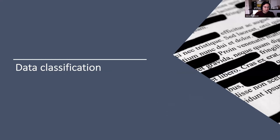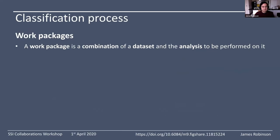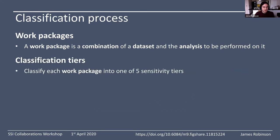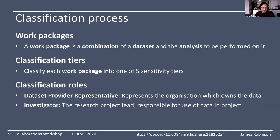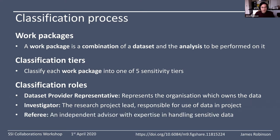Our classification process classifies what we call a work package — a combination of the dataset you're working with and the type of analysis you want to perform on it. We classify each work package into one of five sensitivity tiers. Several different roles take part in the classification: someone from the organization providing the data (the data provider representative), the investigator leading the research project, and finally a referee — an independent advisor with expertise in handling sensitive data — who is there to make sure the first two people come to agreement about the appropriate level of sensitivity and associated controls.